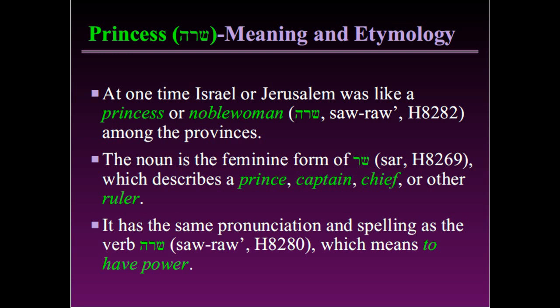At one time, Israel, or Jerusalem, was like a princess or a noble woman. The Hebrew word is 'sarah,' Strong's number 8282. Jerusalem was like a princess among the nations. The noun 'sarah' is the feminine form of the masculine noun 'tsar,' which describes a prince, captain, chief, or other ruler.